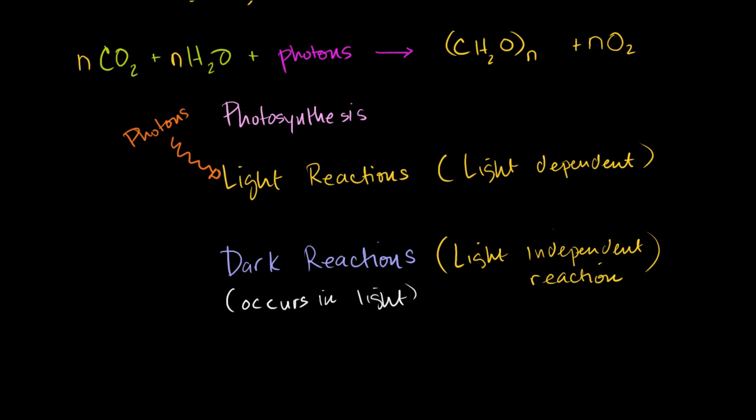So the light reactions need photons, and then it needs water. So water goes into the light reactions, and out of the other side of the light reactions, we end up with some molecular oxygen. So that's what happens in the light reactions, and I'm going to go much deeper on what actually occurs.